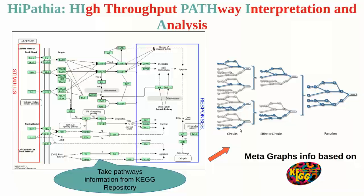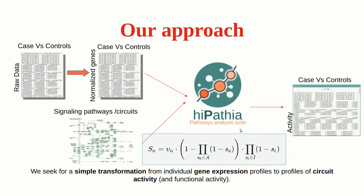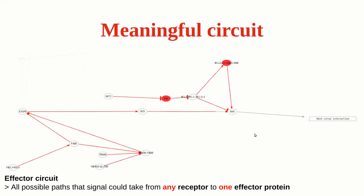In addition to these maps, the Hypathia method also uses expression matrices after normalization as input, providing a simple transformation from individual gene expression profiles to circuit activity profiles. The activity of such circuits, defined within the influence map of pathways, is expected to be a better descriptor of cell functional activity than measurements from the whole pathway or single gene activities.